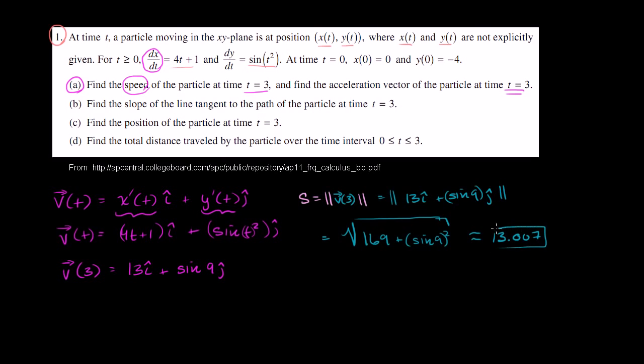So this is approximately equal to 13.007. We've answered the first part. The speed of the particle at time t equals 3 is 13.007.